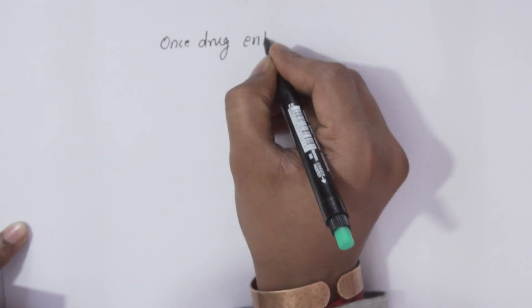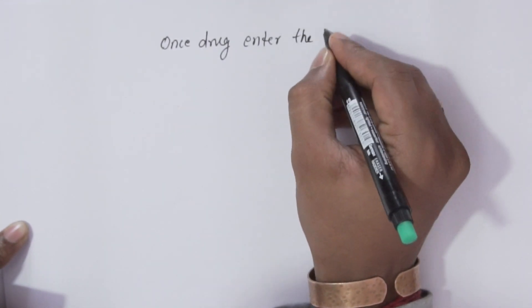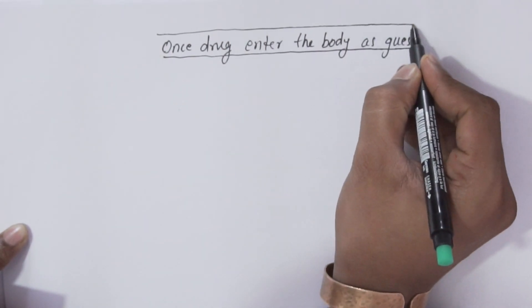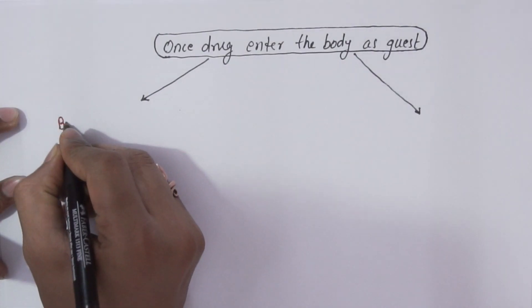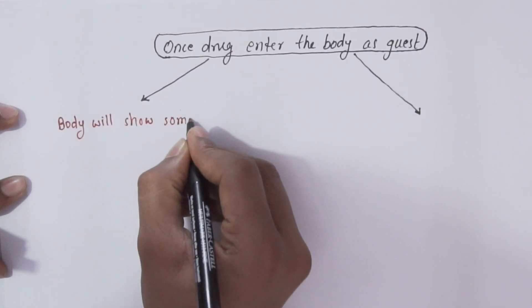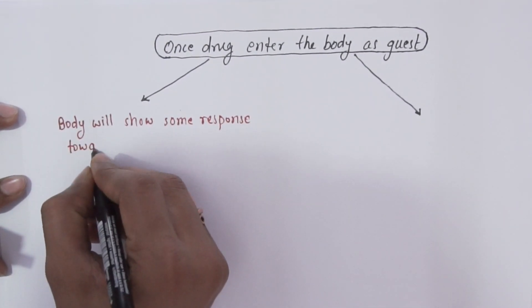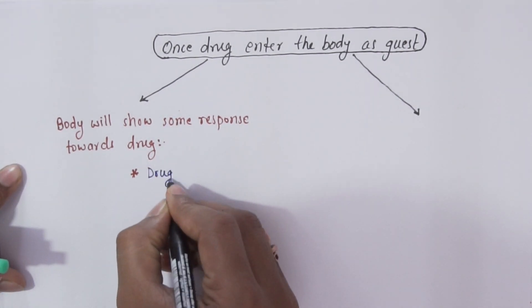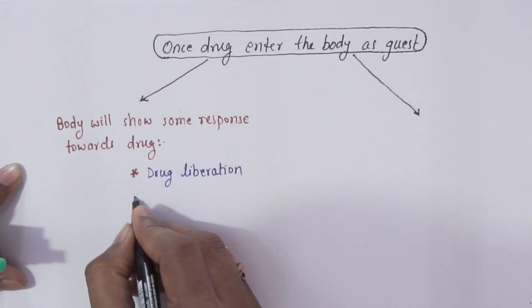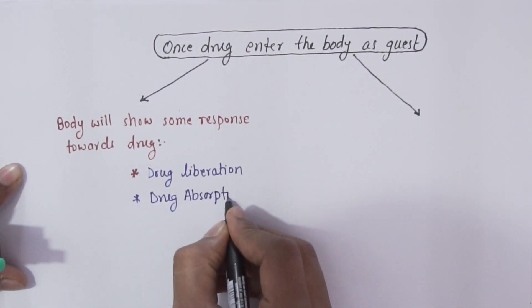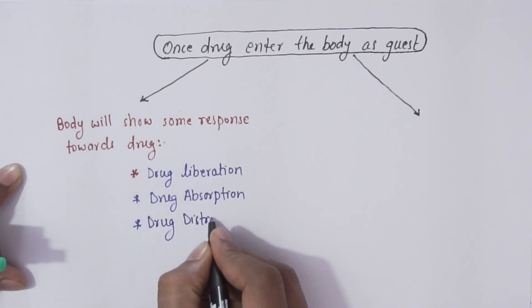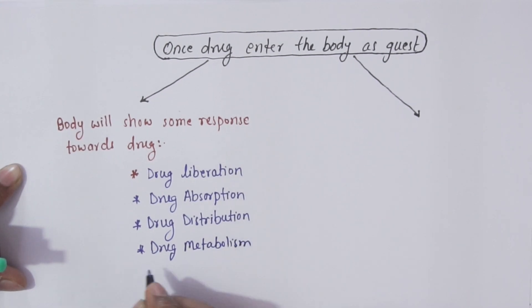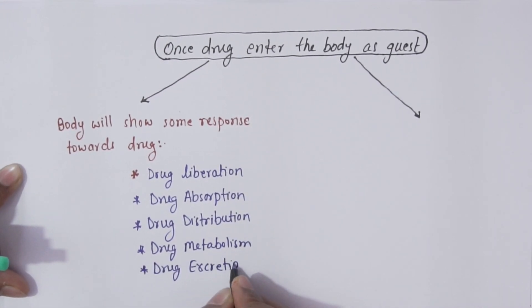As we all know, once drug enters the body, the body will treat the drug as a guest. So there will be two incidents happening at the time. The first incident is that the body will show some response towards the drug, such as drug liberation, which is only for solid dosage form, then drug absorption, drug distribution, drug metabolism, drug excretion. For IV injections, drug absorption and drug liberation will not be there.